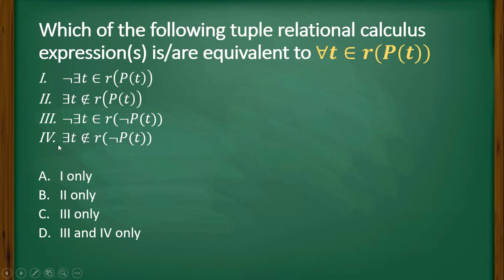there does not exist any t in this relation where this predicate, where this predicate is not true. So this thing and this thing are saying equivalent, right? Because here